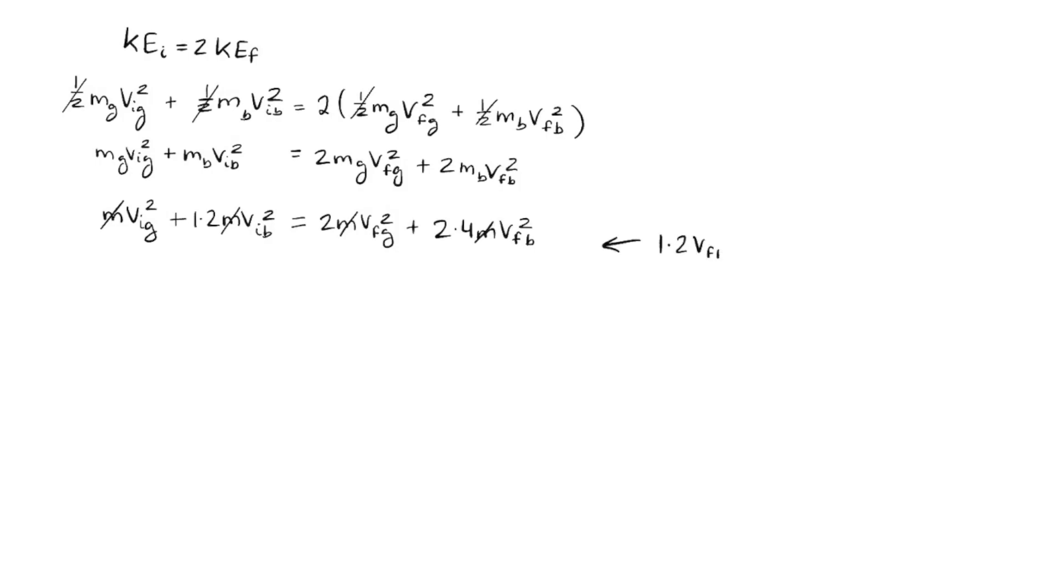And now we can plug our equation that we solved for earlier, which is 1.2 times velocity final of b equals velocity final of g. So now we only have to solve for one variable, which is velocity final of b. So let's copy the rest down.